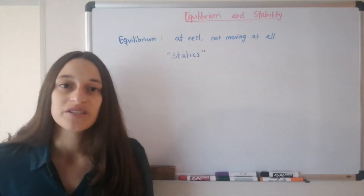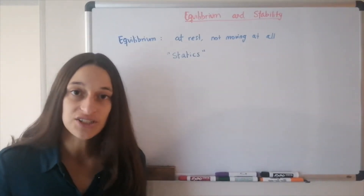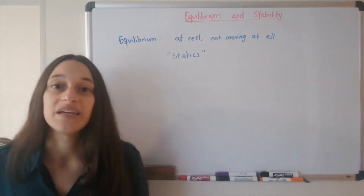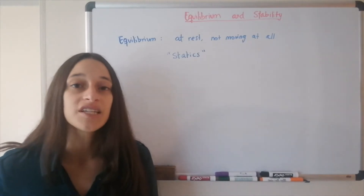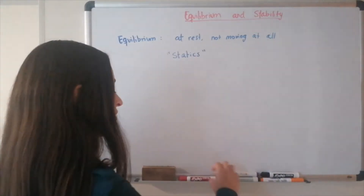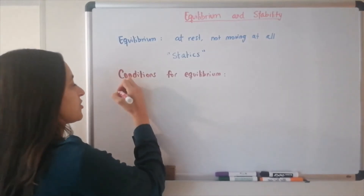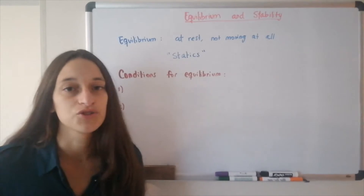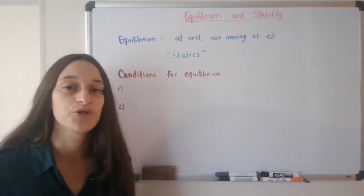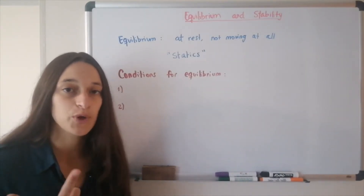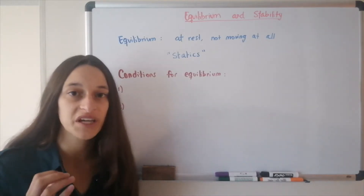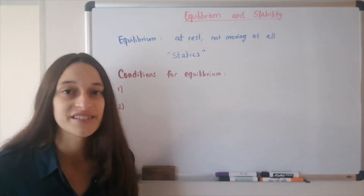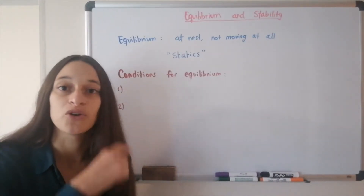Today we're going to discuss the two conditions that an object needs in order to be at rest — to be static or to be in equilibrium. These are called the conditions for equilibrium. There are two conditions because there are two types of equilibrium. For something to be in total equilibrium, it has to have both translational and rotational equilibrium — meaning it's not moving up and down, right or left, forward and backward, and it's also not rotating.